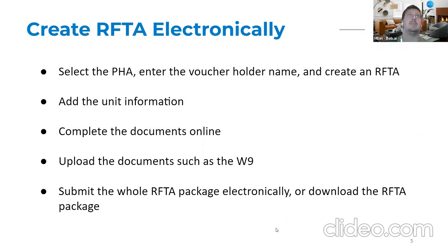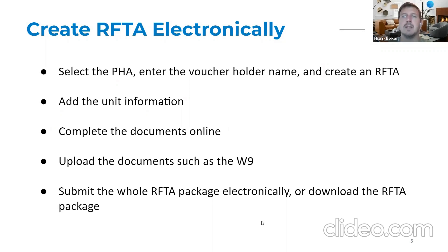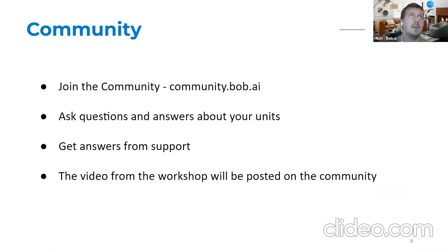As for creating the RAFTA, you can select the PHA when you create it. Enter the renter name and create the RAFTA. Add the information about the unit — you can use it from a previous RAFTA or for a new unit you are just listing. All documents can be completed online, and documents such as the W9 can be uploaded so that the whole form is complete. If you submit the RAFTA through Bob.ai, PHAs will see it in their Bob.ai portal. If the PHA is not a current Bob.ai customer, you can download the whole RAFTA package as a PDF and send it to them. Inside Bob.ai you'll have a full listing — a report of all the RAFTAs you have in progress or already completed. And this is no cost for the landlord.